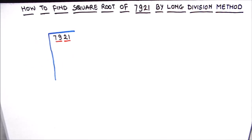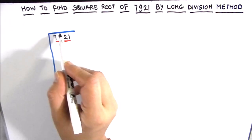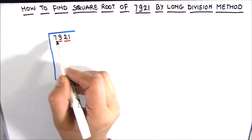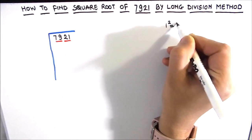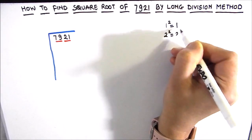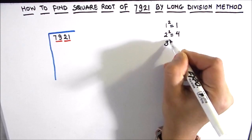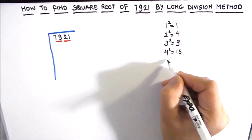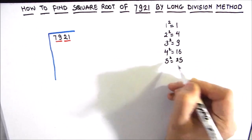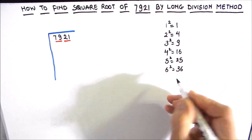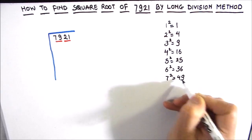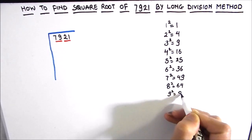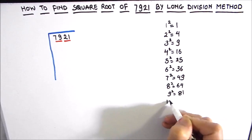The next step is to find the square number whose square is equal to or just less than 79. Let's write the squares: 1²=1, 2²=4, 3²=9, 4²=16, 5²=25, 6²=36, 7²=49, 8²=64, 9²=81, and 10²=100.